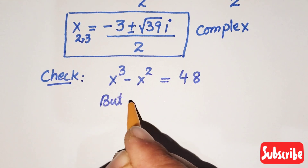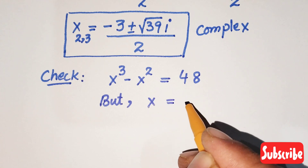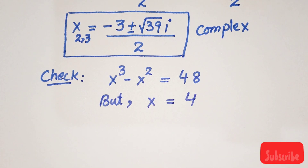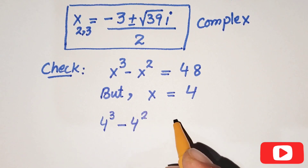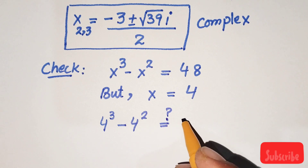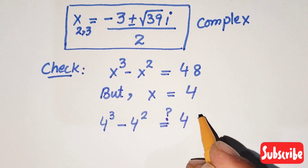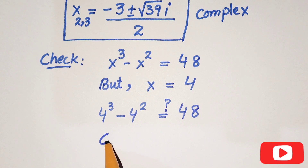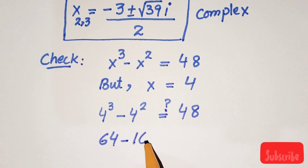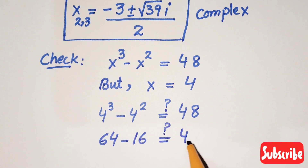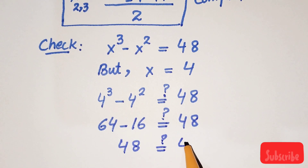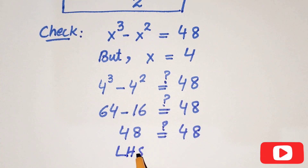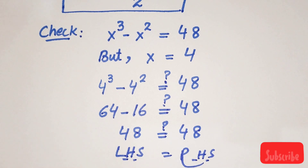Substituting x₁ equals 4 into x cubed minus x squared: 4 cubed minus 4 squared equals 64 minus 16 equals 48. The left-hand side equals the right-hand side, confirming that our real solution is correct.